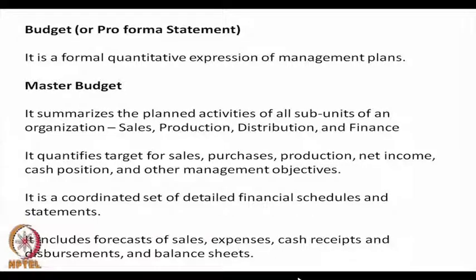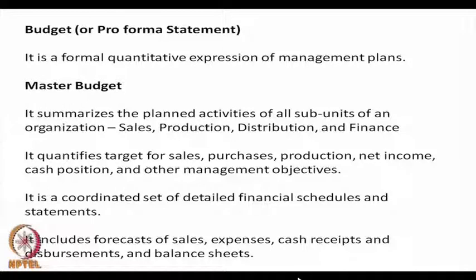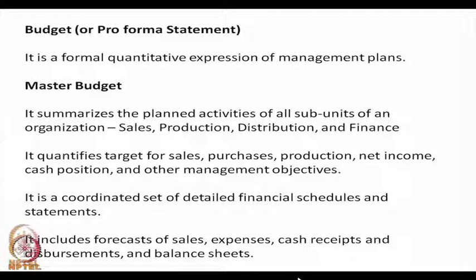A master budget, which is also known as a pro forma statement, is a formal quantitative expression of management plans. Usually, this quantitative expression is in the form of monetary units. The master budget summarizes the planned activities of all subunits of an organization such as sales, production, distribution, and finance. It quantifies targets for sales, purchases, production, net income, cash position, and other management objectives.